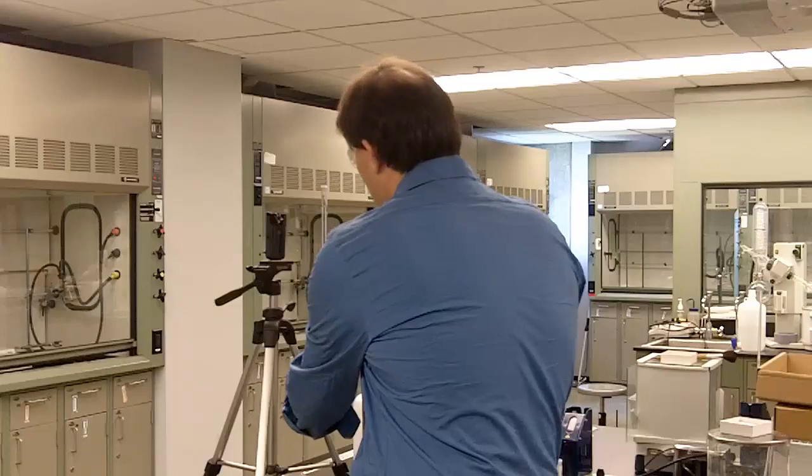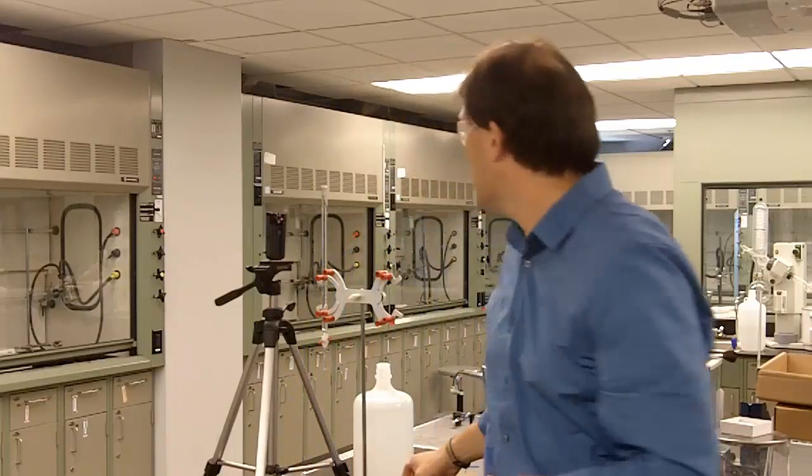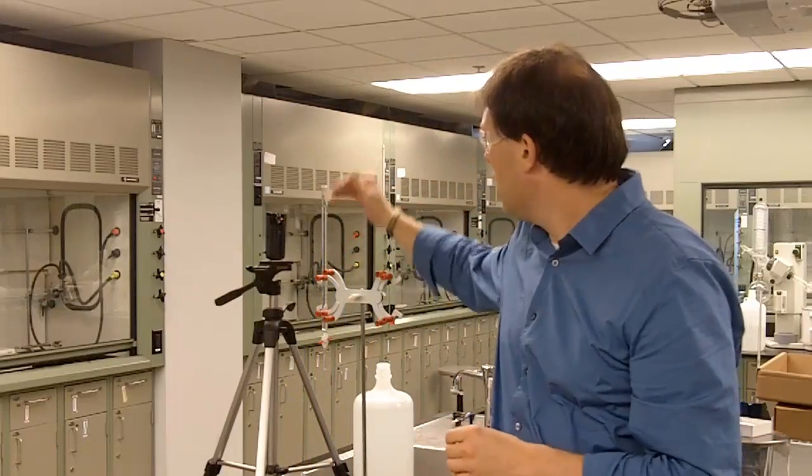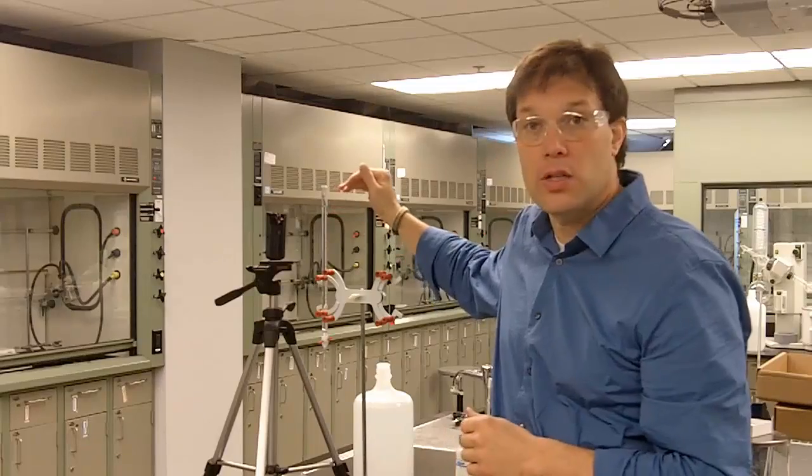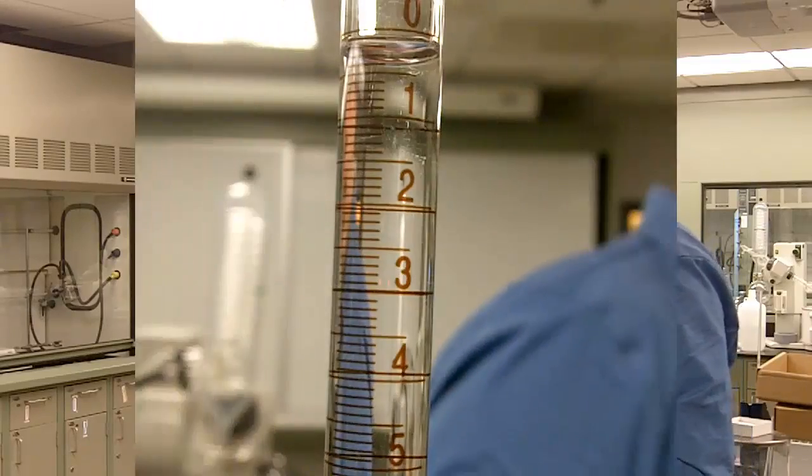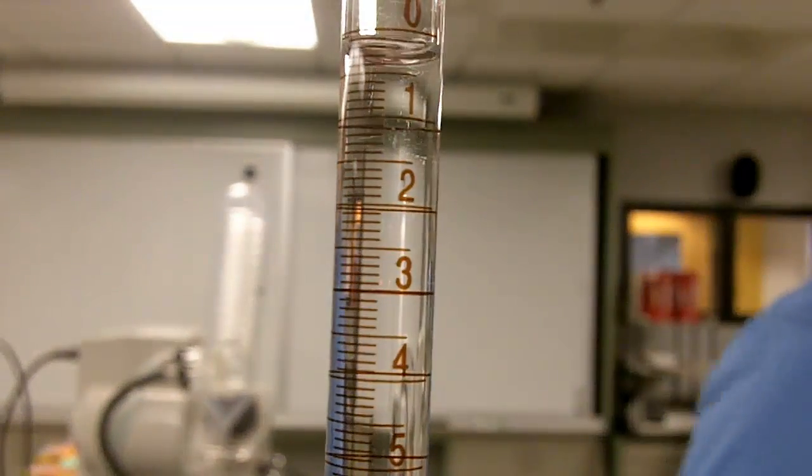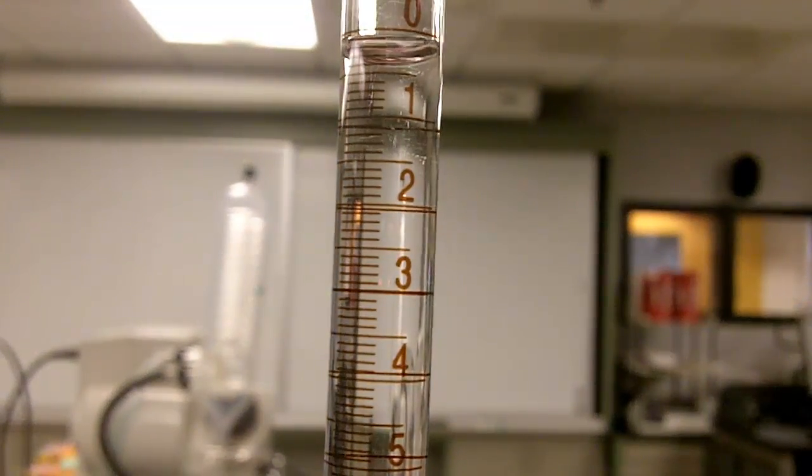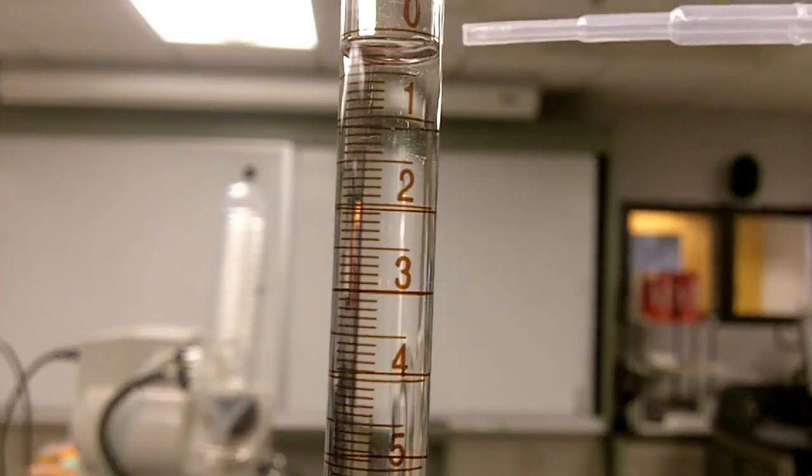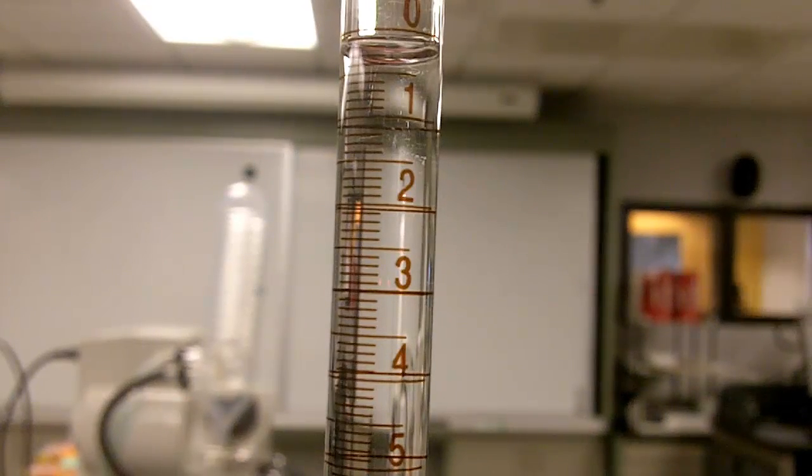So there we go, we drained it back down so that the meniscus of the water here is falling in the graduation range of the burette. So looking at this then what we can see is the meniscus here and the bottom of the meniscus actually falls at about 0.21.